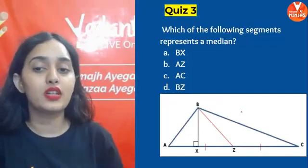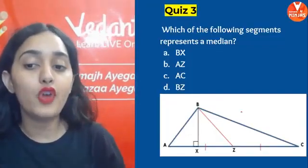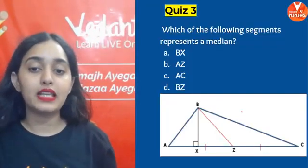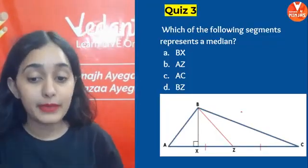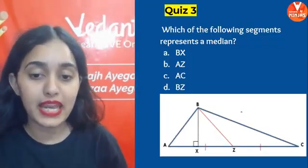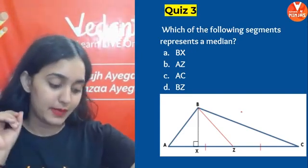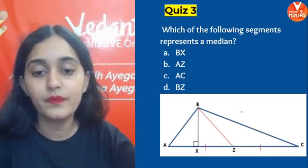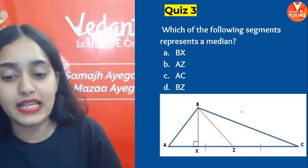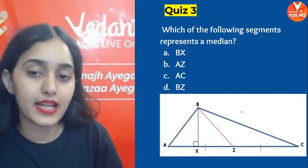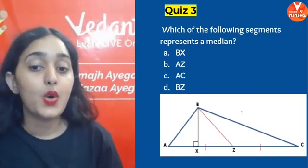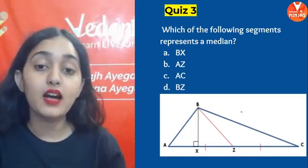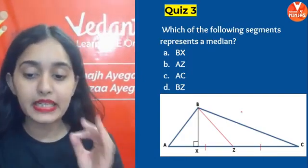Next question: Which of the following segments represents a median? Options: BX, AZ, AC, or BZ. Time starts now — 30 seconds. Think about which segment connects a vertex to the midpoint of the opposite side.